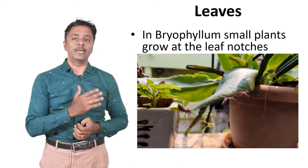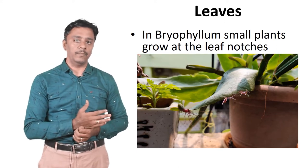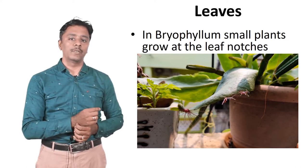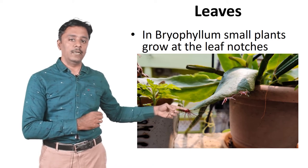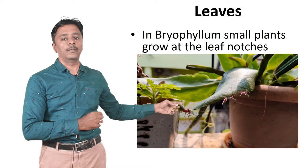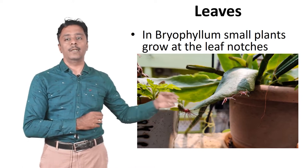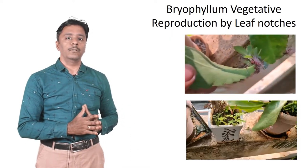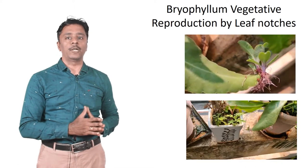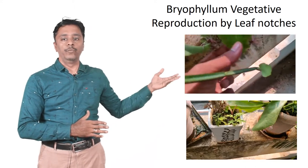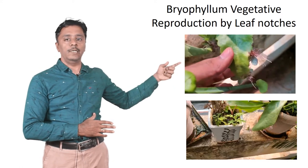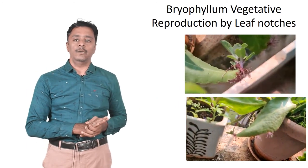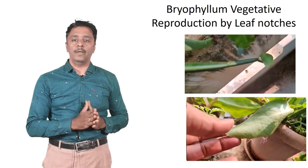Now we are going to see about vegetative reproduction in a plant called Bryophyllum. In Bryophyllum, small plants are grown at the leaf notches. You can see the roots of the small plant which has grown here. There are about three plants which have grown on this leaf. We are going to see that as a video. These are two videos taken in different areas. You can see the leaf notches having small plants in their notches. This is a real video taken from a plant nearby my home.